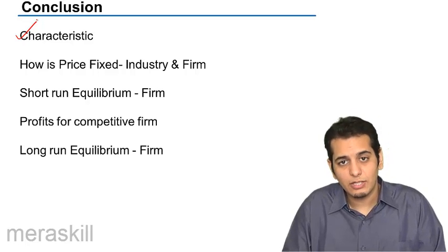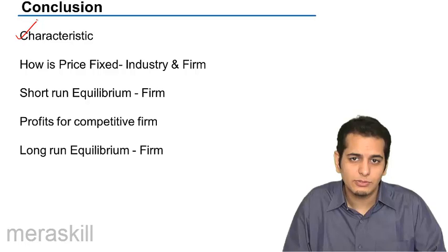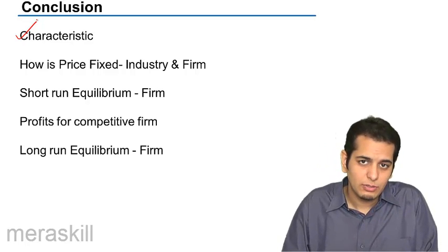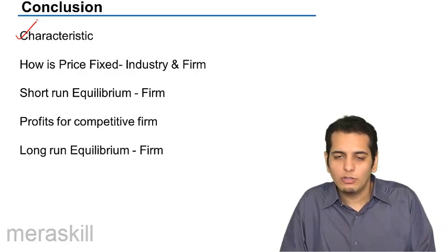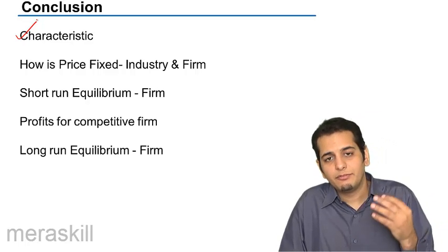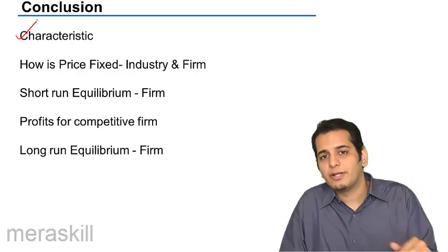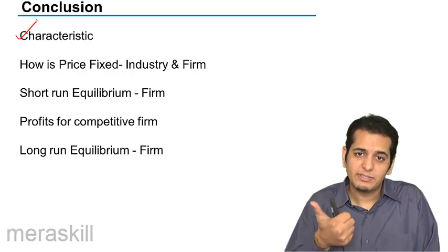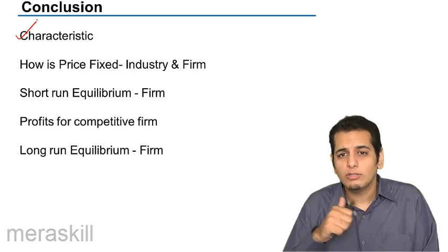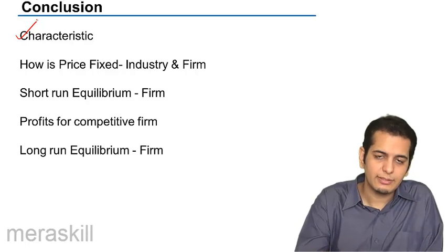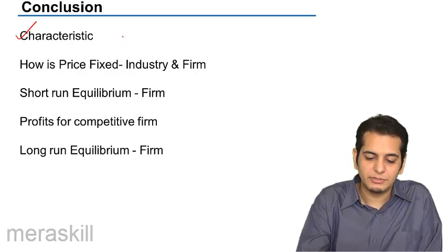The characteristics are: large number of buyers and sellers, free entry and exit of all buyers and sellers, free movement of goods, homogeneous products, the firm is a price taker, and buyers and sellers have complete knowledge about market conditions. These are the characteristics of perfect competition.